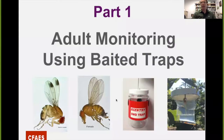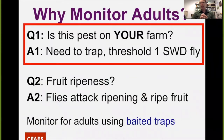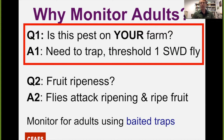Now we're going to move on and talk about adult monitoring using baited traps. There's always this question about why monitor adults. Monitoring is really one of the keystones of IPM — regardless of the crop or the pest, monitoring of the status is very important in terms of the ultimate management. We ask: do you know if this pest is on your farm? If you don't know, then you're going to need to monitor and trap for that. It's really important for this particular pest because the threshold is really just one fly — that first detection kicks our management into gear.